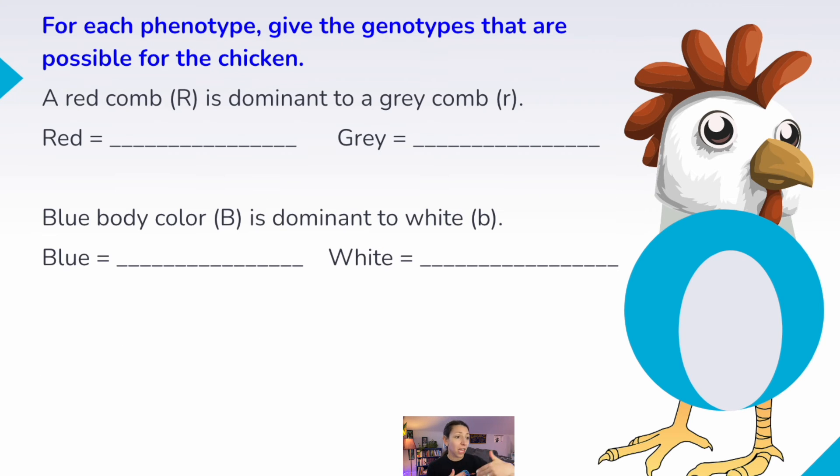All right, for each phenotype, we're going to reverse it, give the genotypes that are possible for this chicken. A red comb, which is the part on their head, big R, is dominant to a gray comb, little r. And then blue body color is dominant to white. So tell me what the possible genotypes are for each of these phenotypes. So a red comb could be big R, big R, or big R, little r. We could get both of those phenotypes from those two genotypes. And then to get the gray comb, we need little r, little r. And then blue body color could come from big B, big B, or big B, little b. And white body color could come from little b, little b.